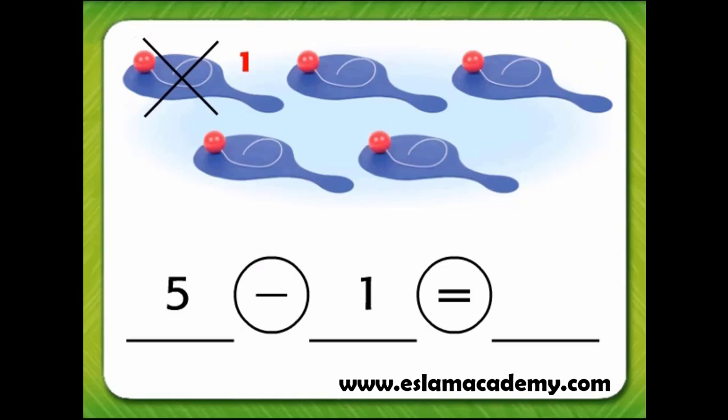What number goes in the third blank? The third blank is after the equal sign, so the number in the third blank is the difference. One paddle ball was taken away, so the difference is one, two, three, four.